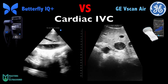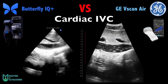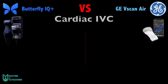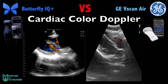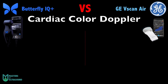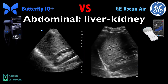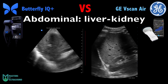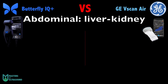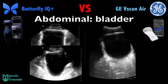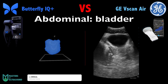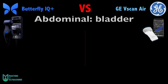Here you can see the inferior vena cava — the definition of the Vscan is higher again. Now this is a weak point for the Vscan: cardiac Doppler, where the Butterfly IQ is superior. The liver-kidney interface — Morrison's pouch — is pretty similar between the two, maybe slightly better on the Vscan. The Butterfly IQ has a tool to calculate bladder volume with true-axis measurement, whereas the Vscan has only B-mode.